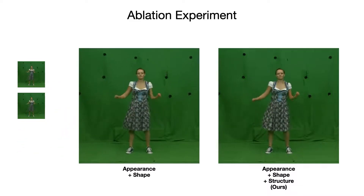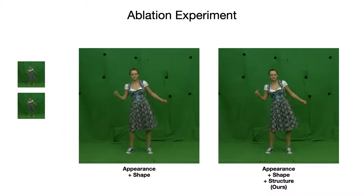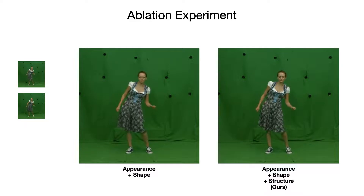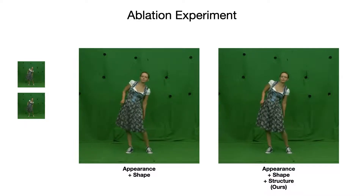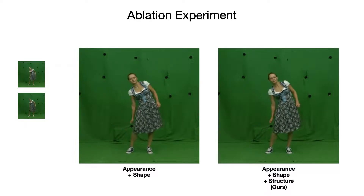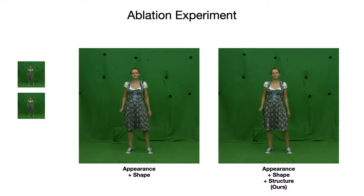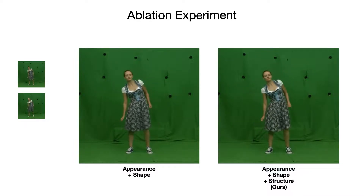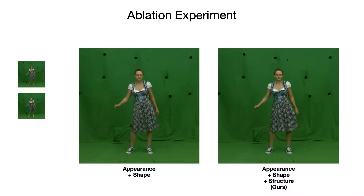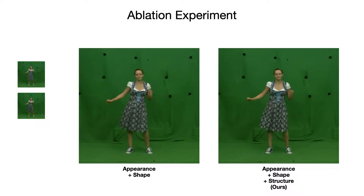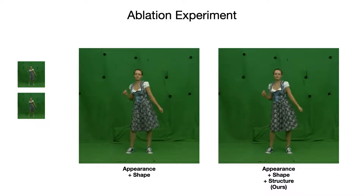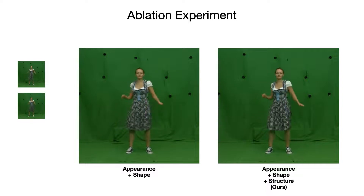After including the shape component, our framework produces a realistically swinging dress, but blurs high frequencies in the texture. By adding our structure network, the final framework produces the most appealing results, including sharp outlines and textures.